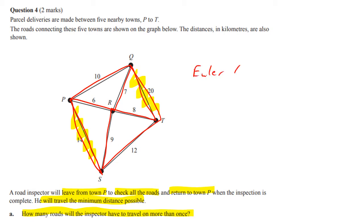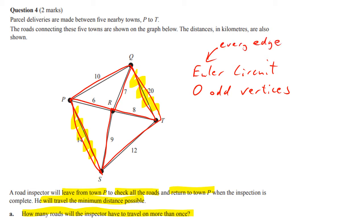For an Euler circuit you need zero odd vertices. Remember, an Euler circuit covers every edge. If you look at this diagram, you'll notice that four of the vertices are odd, and the only way to fix that is to add an extra road — which is why you have to repeat some roads twice.